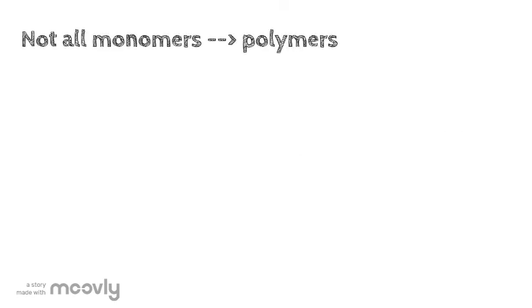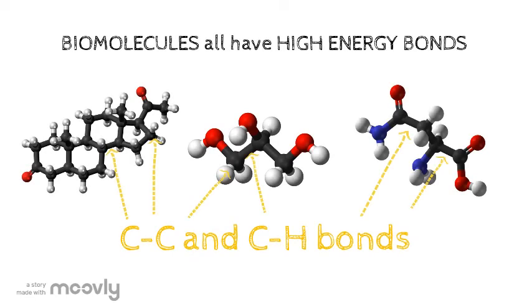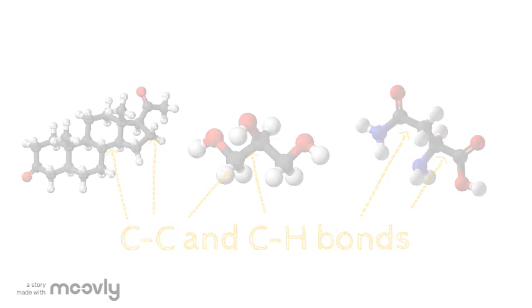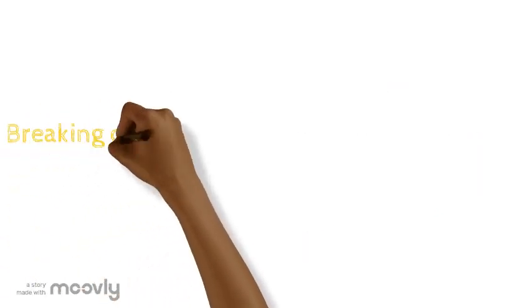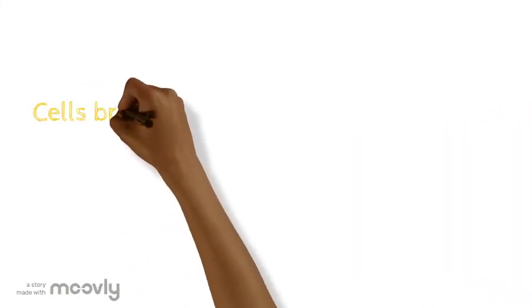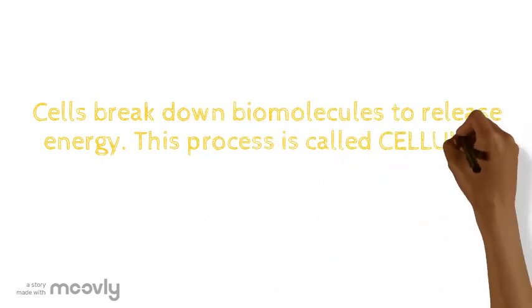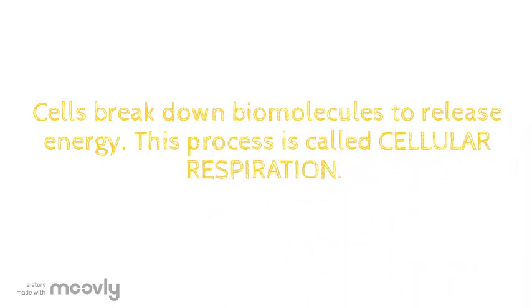But cells don't have to use monomers to build more cell parts. Each biomolecule contains high-energy carbon-carbon and carbon-hydrogen bonds. This means biomolecules can be broken apart, releasing the energy from the bonds. If a cell needs energy, this is exactly what it does. The process of releasing energy from biomolecules is called cellular respiration.